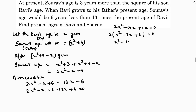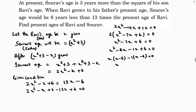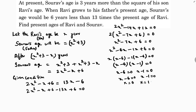Taking 2 as common: X squared minus 7X plus 6 equals 0. Dividing both sides by 2 gives X squared minus 7X plus 6 equals 0. Factoring: X squared minus 6X minus X plus 6 equals 0, which gives X(X minus 6) minus 1(X minus 6) equals 0. So (X minus 6)(X minus 1) equals 0, giving X equals 6 or X equals 1.